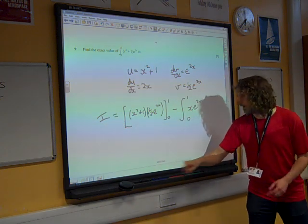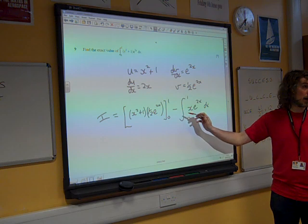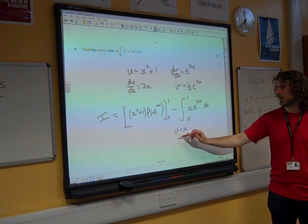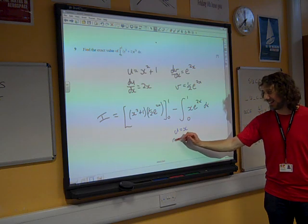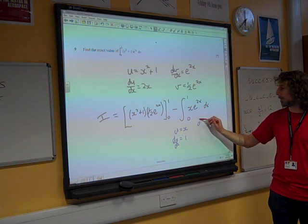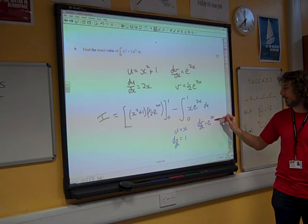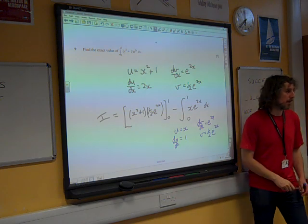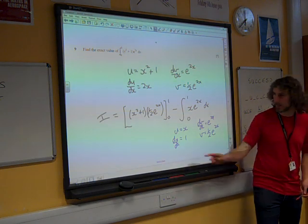So we're now looking at our new expression here, and we'll do the same thing again. We'll say that u is x. You are x. Got less of a love the second time. And dv by dx would be e to the 2x. So v is half e to the 2x.